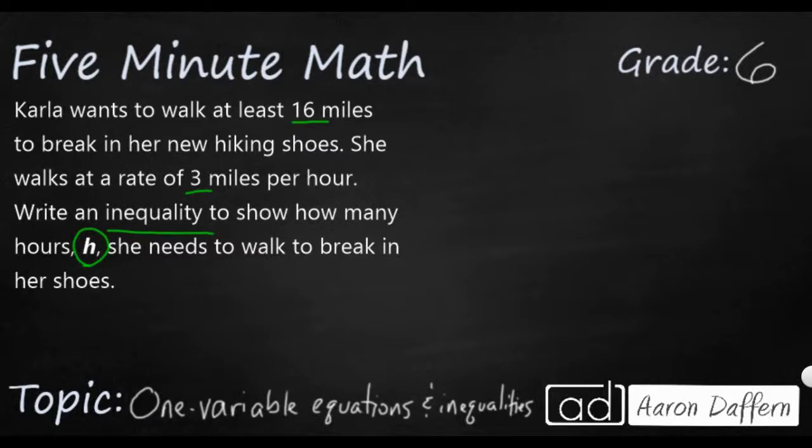Well, let's see what her goal is. Her goal is at least 16. She can walk more than 16, but she just can't walk less than 16. And she walks at a rate of three miles per hour. So we're going to write it like this. Three miles times H. So if she walks one hour, then she'll have gone three miles. If she has walked two hours, she'll have gone six miles, three hours, nine miles, so on and so forth.